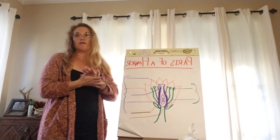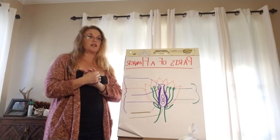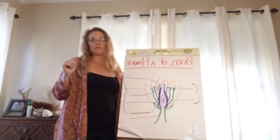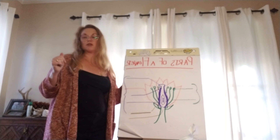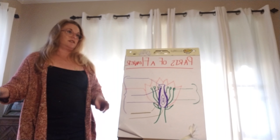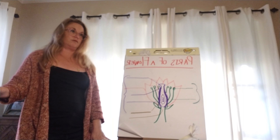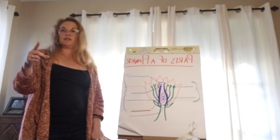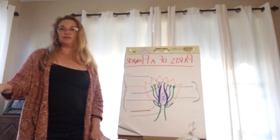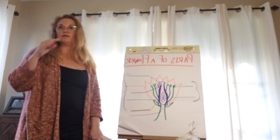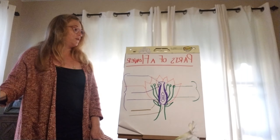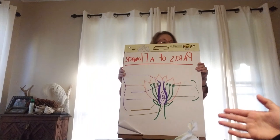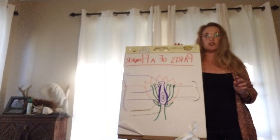Okay, so today for our science lesson we are going to talk about where seeds happen, how seeds happen, and what flowers are. Do any of you know where seeds come from or how seeds are made? From flowers that have bloomed — good, that's true. Anyone else? From the female flower. There are female parts of a flower and there are male parts of a flower, so let's talk about the parts of a flower.